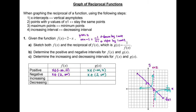Next, let's identify the increasing and decreasing intervals for both the original function and the reciprocal function. Let's pretend we are on a roller coaster always moving forward, which means always going to the right. As we move to the right, we are going down, so this linear relation f(x) is always decreasing. There is no increasing interval.